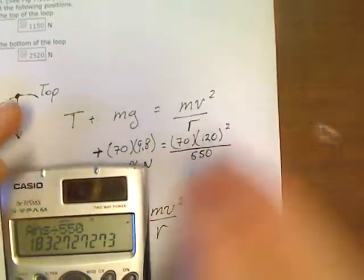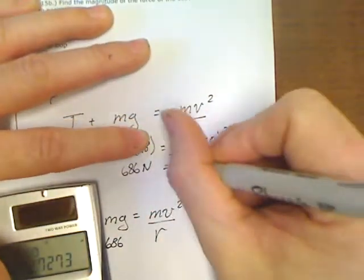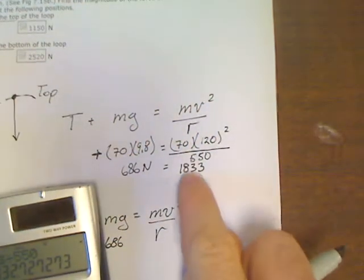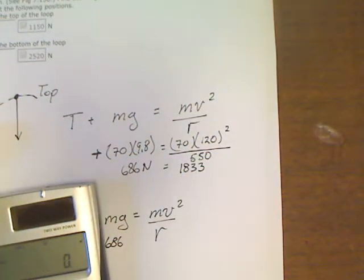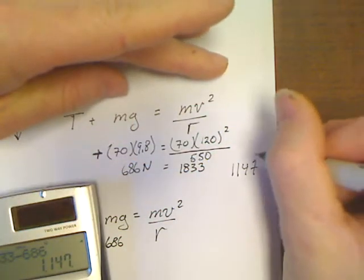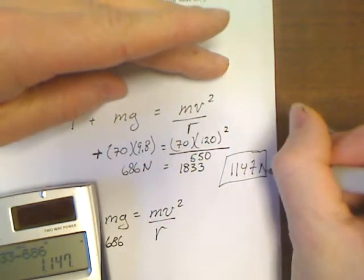So 70 times 120 squared divided by 550, 1832. So up here, we've got equals 1830, well, 1833. So 1833 minus 686. And so our answer up here is 1147 newtons.